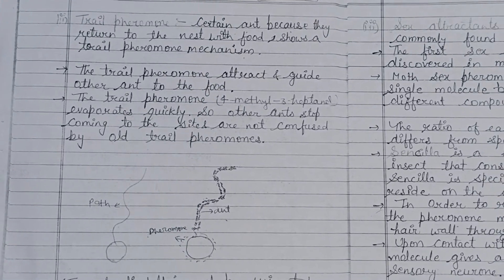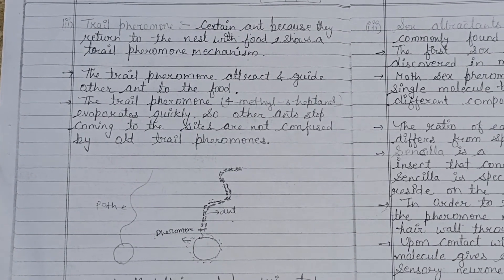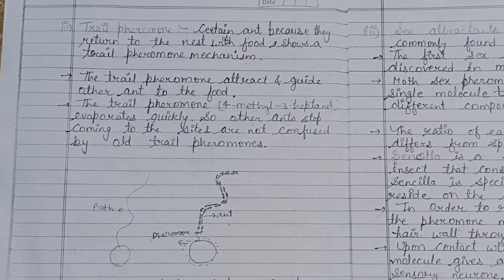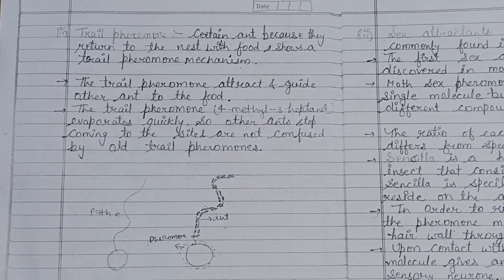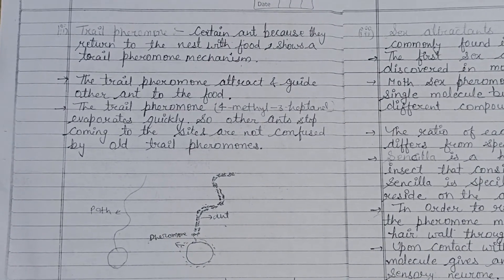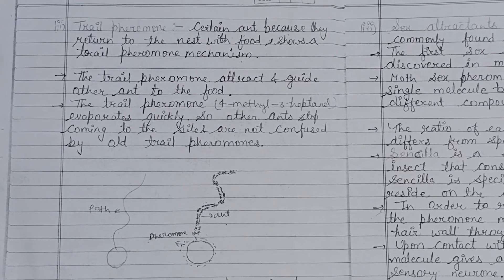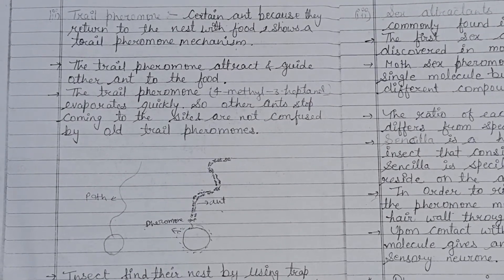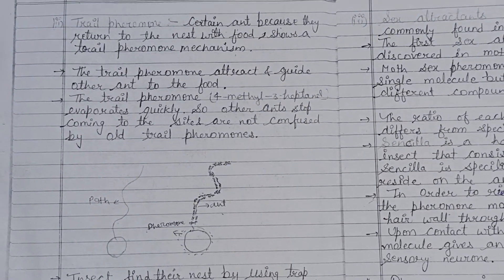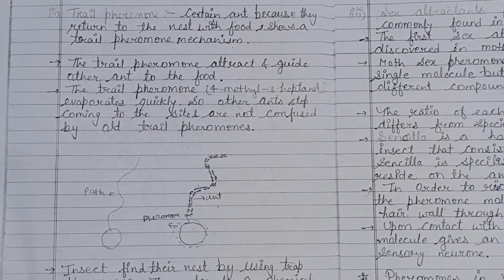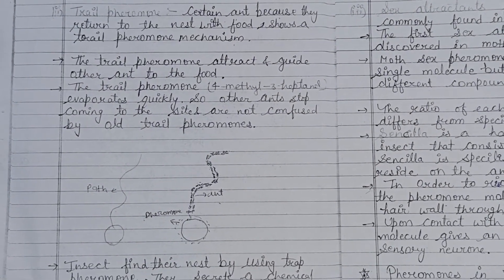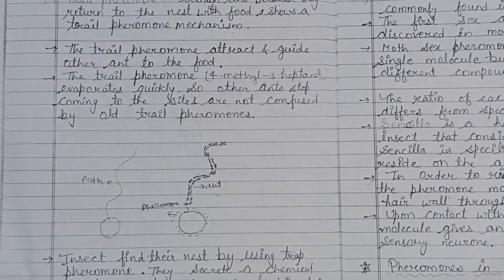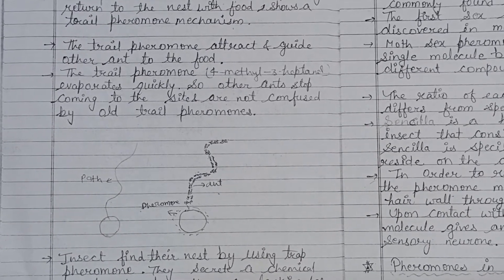The second type of signaler pheromone is the trail pheromone. Certain ants returning to the nest with food show a trail pheromone mechanism. The trail pheromone attracts and guides other ants to the food, as can be observed in daily life. The trail pheromone 4-methyl-3-heptanol evaporates quickly, so other ants stop coming to a site once food is found elsewhere.